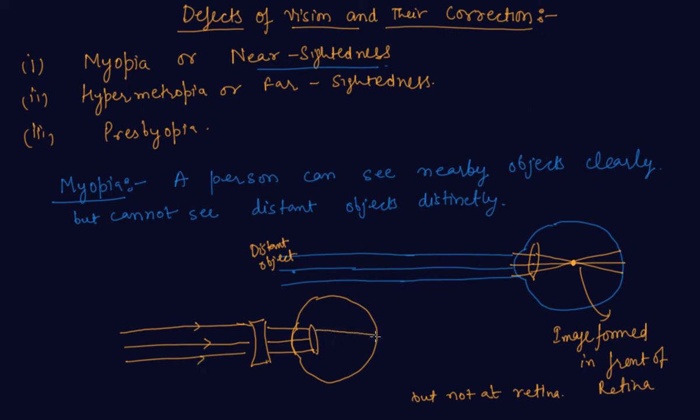Now the image is formed at the retina itself. This is a concave lens. This defect is removed by using a concave lens of proper focal length or suitable power which will bring the image back on the retina, thus the defect is corrected.